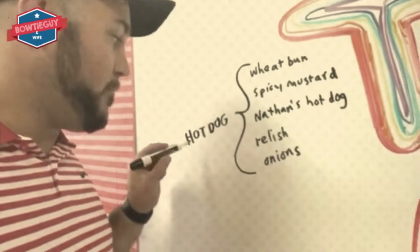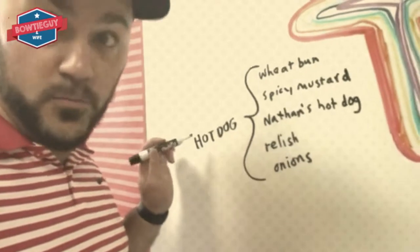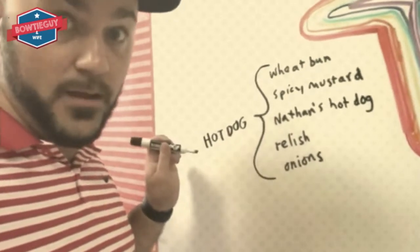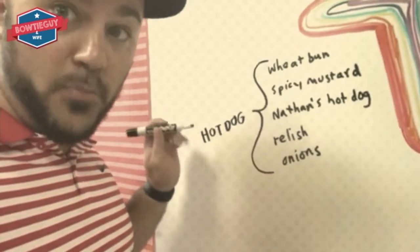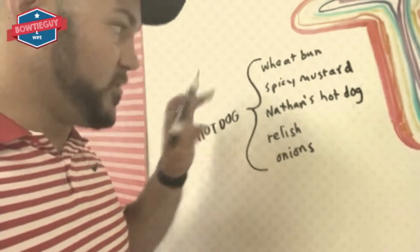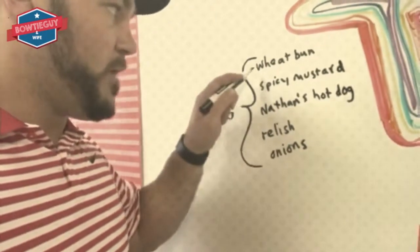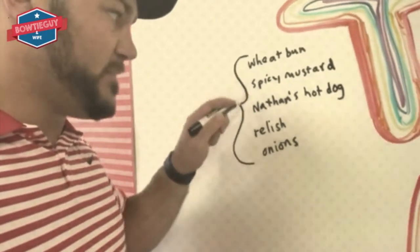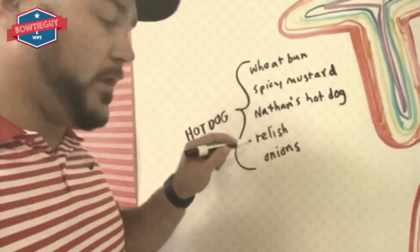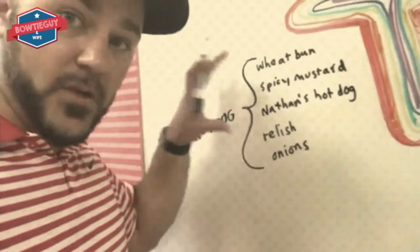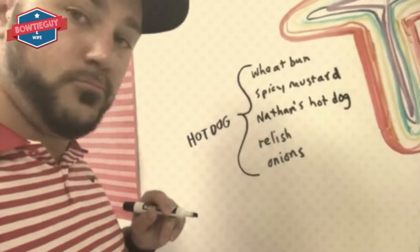This is a bridge map. Let's talk about hot dogs — this is what I put on my hot dog. This is part to whole. So these are the parts, this is the whole: wheat bun, spicy mustard, Nathan's brand hot dog only, relish and onions. Those are the parts, this is the whole. Bridge map.